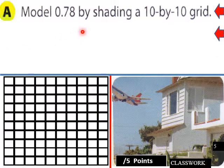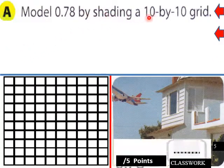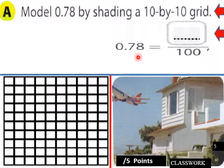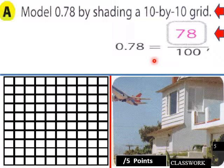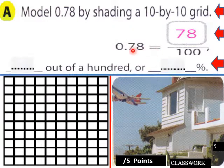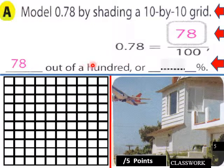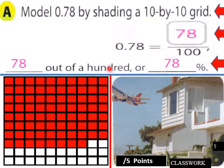Model 0.78 by shading a 10 by 10 grid. 0.78 equals 78 over 100, or 78 percent. So that'd be 78 percent here, and this would be what it would look like in a grid. 78 squares filled in out of 100.